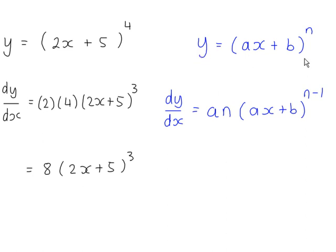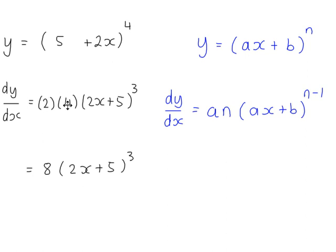This formula always applies as long as you have a linear function inside the brackets raised to a power. There's no necessity for the x term to go first and the constant on the other side — the solution is exactly the same. A common mistake is to think that because you always write a in this position, you then use the constant 5 as a and multiply 5 times 4 to get 20 here — and that's wrong.